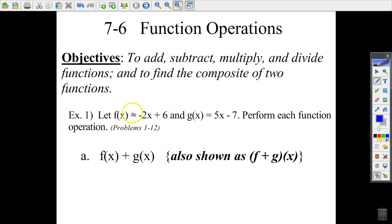This particular example gives me two functions: an f function described as negative 2x plus 6, and a g function described as 5x minus 7. The directions tell me to perform each operation. The first one is the operation of addition, which basically says to take the f function and add to it the g function.